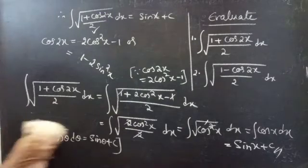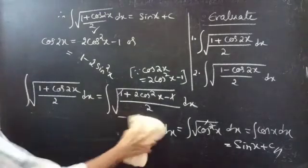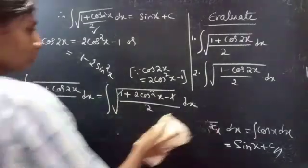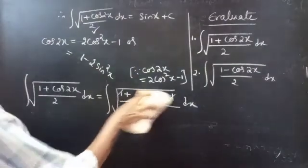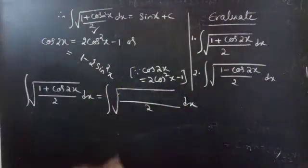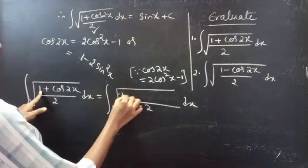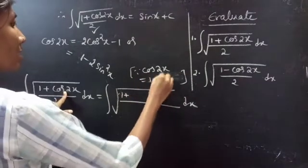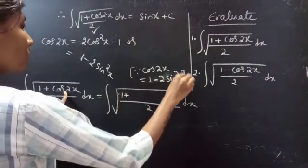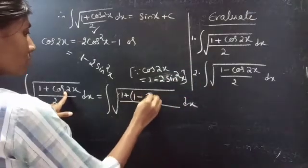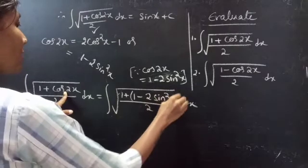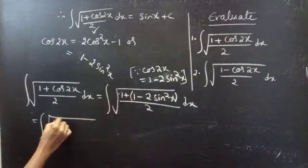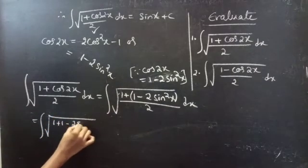Now let's substitute the other formula. We have cos 2x equals 1 minus 2sin²x. So this equals the integral of square root of 1 plus (1 minus 2sin²x).